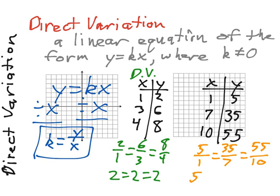Well, 5 divided by 1 is 5, 35 divided by 7 is 5, 55 divided by 10 is 5.5. The first two are equal, the last one is not, so this is not direct variation. We need that ratio of y's to x's to always be the same thing.